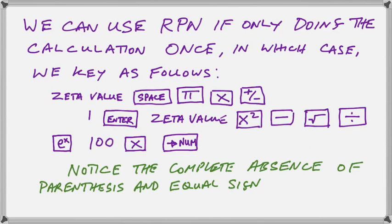So RPN accumulates our intermediate answers on the stack. And by the time that we press the square root key, we have got the whole thing accumulated in that first line on the stack. That gives us a square root.